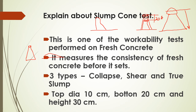The top diameter of the slump cone is 10 cm and it is in the form of a frustum of a cone. If you remove the top of a cone, you get the frustum. The top opening diameter is 10 cm, the bottom diameter is 20 cm, and the height of the cone is 30 cm.